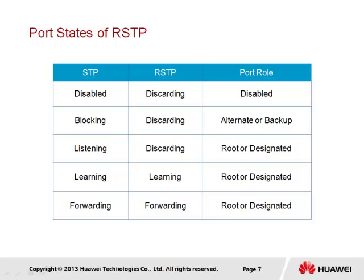The port states used in the STP protocol are compared here to the port states represented in RSTP, along with the typical port roles associated with each port state. The change in port state occurs since there is no longer a need for forward delay periods. In RSTP, only three port states exist: discarding, learning, and forwarding. The backup port takes on a discarding state, equivalent to the blocking state in STP. In the learning state, the switch will learn MAC addresses, and in the forwarding state will begin to forward user traffic.